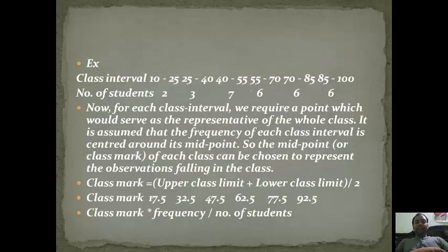Now suppose the interval is given. Here like 10 to 25 - number of students 2, 25 to 40 - 3, 40 to 55 - 7, 55 to 70 - 6, 70 to 85 - 6, and 85 to 100 - 6. In such cases, we find the midpoint or class mark. For finding the midpoint, we add the lower limit and upper limit and divide by 2. So this becomes (10+25)/2 = 17.5, then 32.5, 47.5, and so on. Then for finding the mean of that series, we multiply this by frequency, that is number of students. Class mark times frequency divided by total number of students will be the mean.